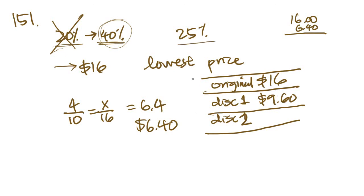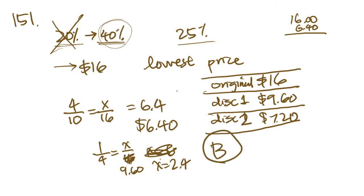Second discount is 25%. So what we do is we set up another ratio and we get X equals 2.4. So you divide that by 4, 2.4. And you subtract 2.4 and you get 7.20. And 7.20 is going to be answer choice B. All right. Check me out in the next video.